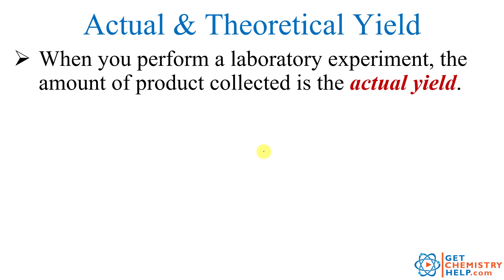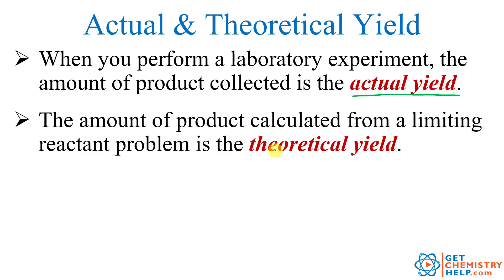Before we can discuss percent yield, we need to discuss two other types of yield, known as actual and theoretical yield. When you go into a laboratory and weigh out some chemicals and mix them together, or if you're in industry producing a new medicine or compound, the amount you actually produce at the end is known as the actual yield — also sometimes called the experimental yield. But this is often different from the amount of product you calculated you should have made, which is known as the theoretical yield.